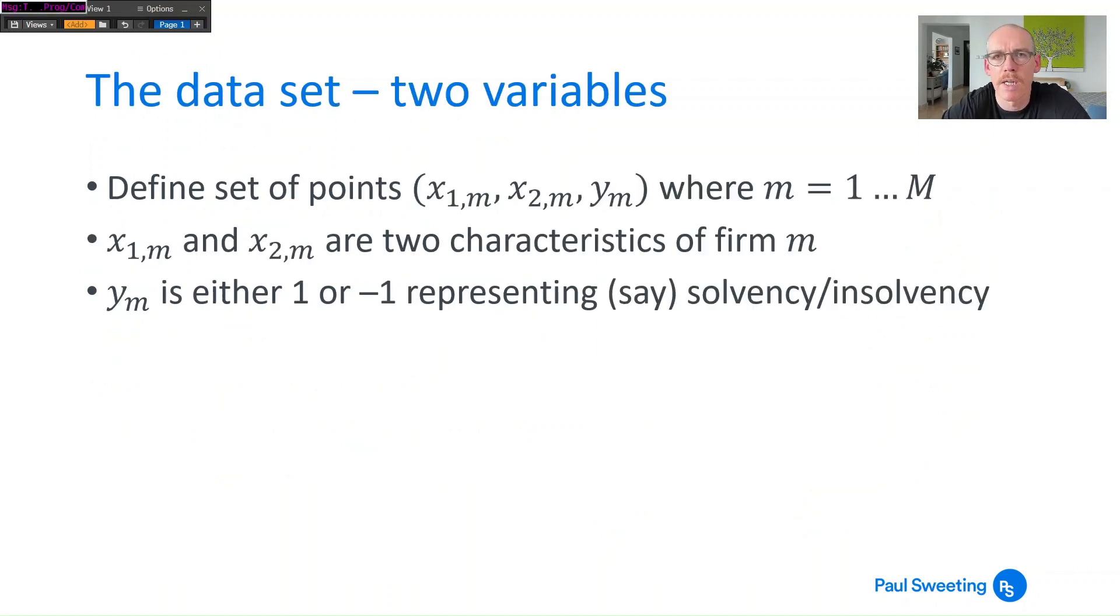So let's start defining things a little bit more formally. Let's define a set of points x₁ₘ, x₂ₘ all the way and yₘ where m is anything from one to capital M. x₁ₘ, x₂ₘ are the two characteristics of firm M - so say profitability or size or assets over liabilities or some other measure - and yₘ is either one or minus one depending on whether a firm is solvent or not.